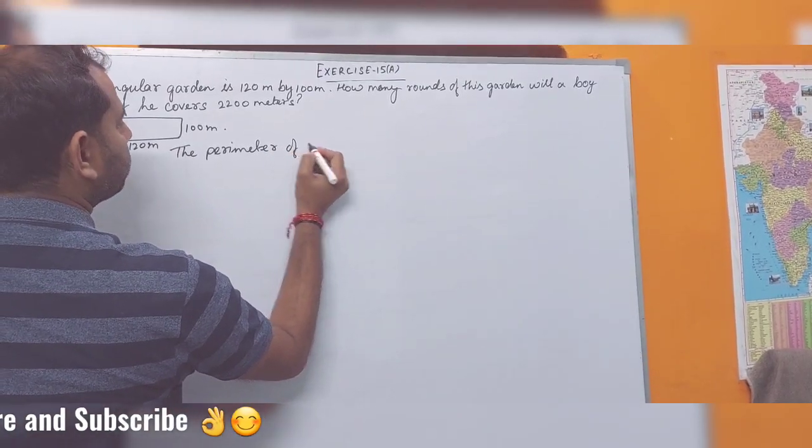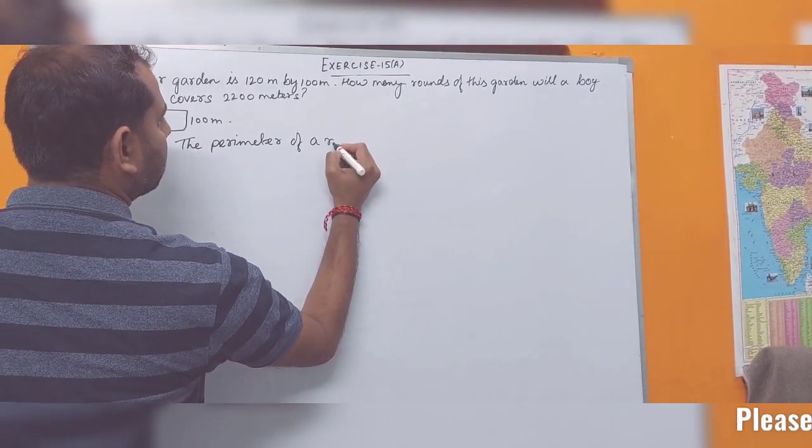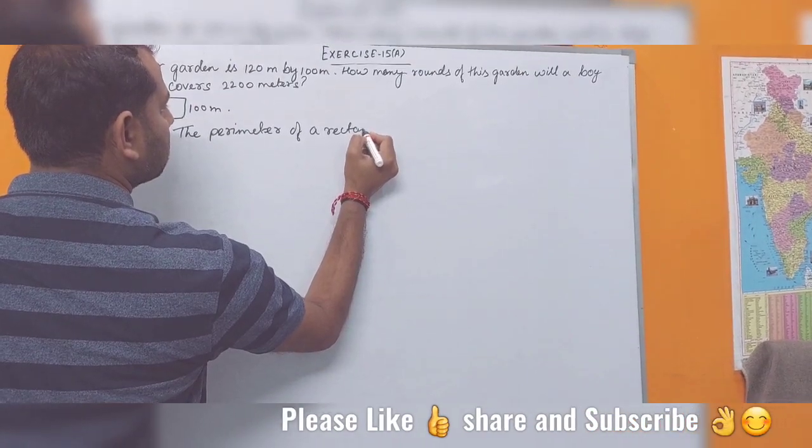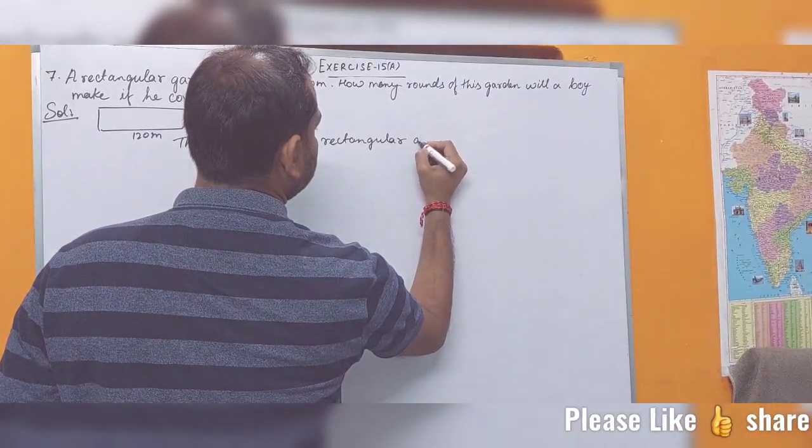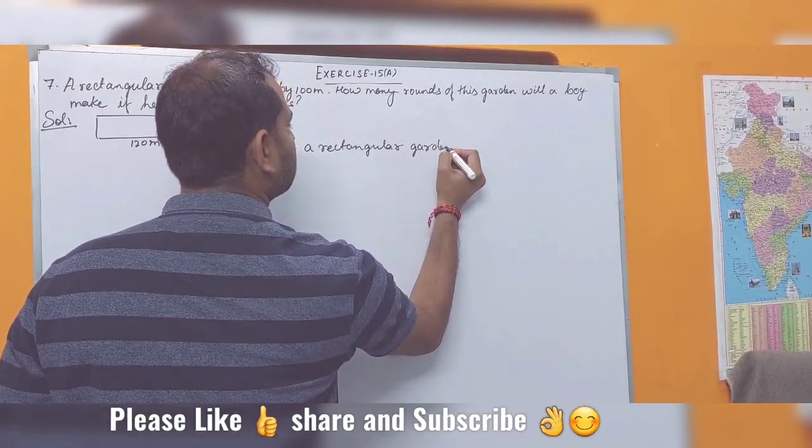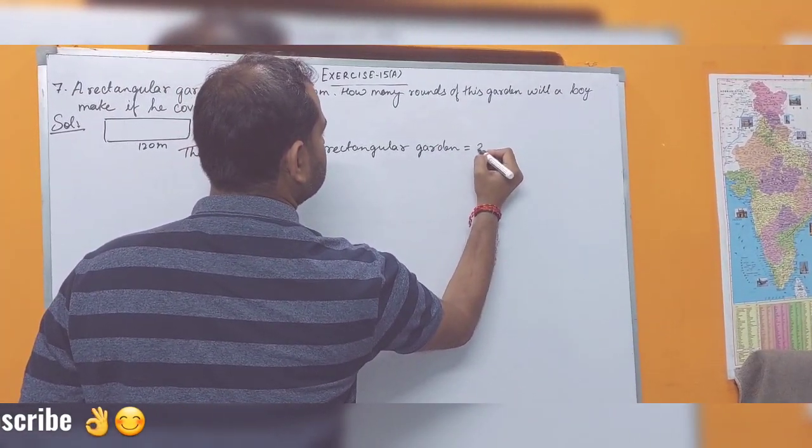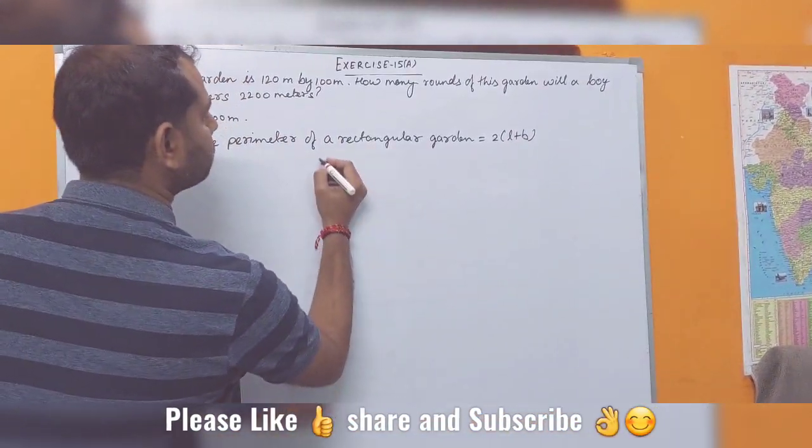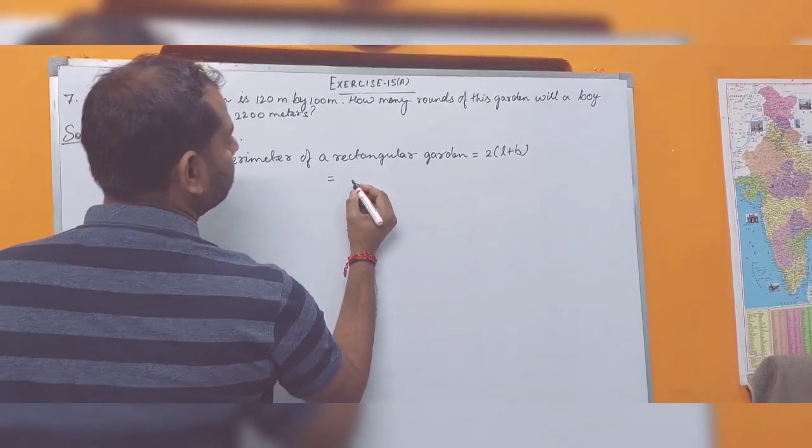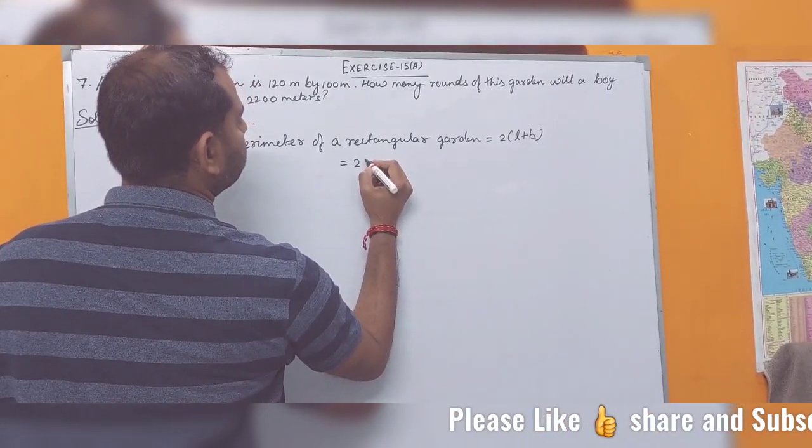The perimeter of a rectangular garden is equal to 2 into length plus breadth. Now by putting the value of length plus breadth, we will find out the perimeter of the rectangular garden.